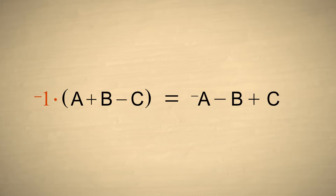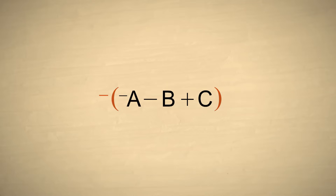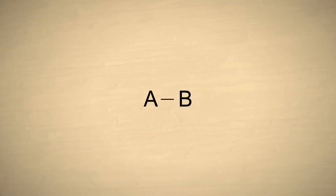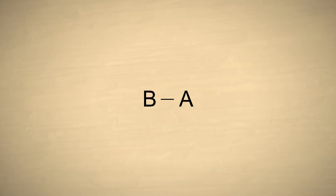Instead of multiplying by negative one, we could just put a negative sign in front of the parentheses, which means exactly the same thing. So a negative sign in front of the parentheses has the same effect as switching the sign of each number summed in the parentheses. Here's one more trick using the distributive property. Let's say we start with A minus B. If we enclose this in parentheses with a negative sign in front, it switches the sign of each number. Using the commutative property, we can then swap the positions of the two numbers. And the result is that we now have B minus A. So placing a negative sign in front of two numbers which are subtracted swaps the two numbers.